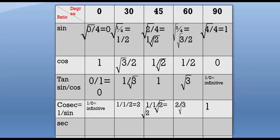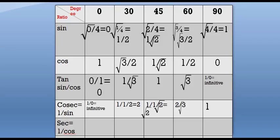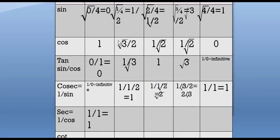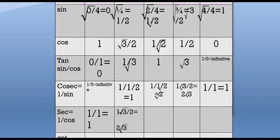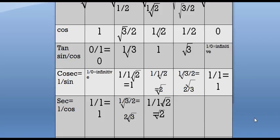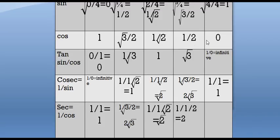Sec is equal to 1 by cos. So we will divide 1 by every cosine value. Start from sec 0: 1 by 1 is equal to 1. For 30: 1 by root 3 by 2 is equal to 2 by root 3. For 45: 1 by 1 by root 2 is equal to root 2. For 60: 1 by 1 by 2 is equal to 2. And the last, for 90: 1 by 0 is infinity.